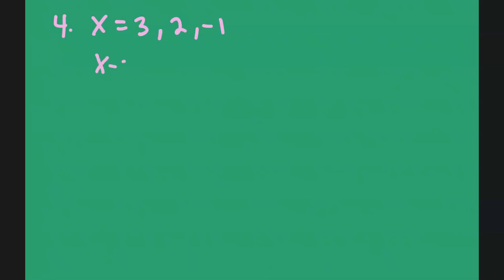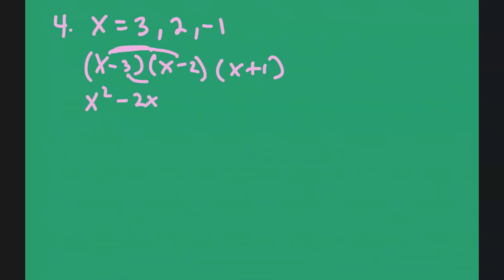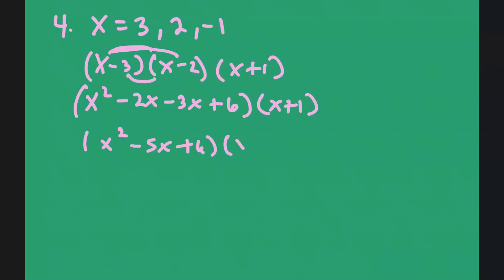We have x minus 3 times x minus 2 times x plus 1. What I did is: you move the 3 to the left side, so it's x minus 3. You move the 2 to the left side, it's x minus 2. And you move the negative 1 to the left, it's x plus 1. Applying the distributive property: x times x is x squared, x times negative 2 is negative 2x, negative 3 times x is negative 3x, negative 3 times negative 2 is positive 6. Remember I'm still multiplying by x plus 1. So I have x squared minus 5x plus 6 times x plus 1.